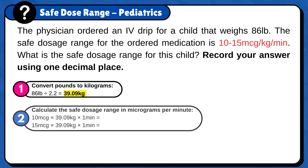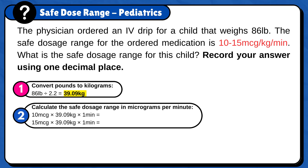Now calculate the safe dosage range in micrograms per minute. 10 micrograms times 39.09 kilograms times 1 minute is 390.90 micrograms per minute. And 15 micrograms times 39.09 kilograms times 1 minute is 586.35 micrograms per minute. So the safe dosage range is 390.90 to 586.35 micrograms per minute.